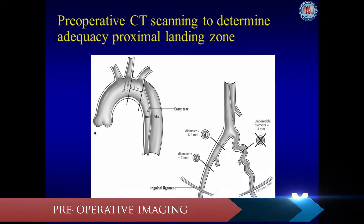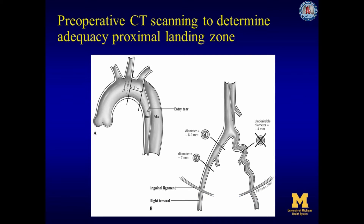The access vessels are determined — the ideal vessel is straight, not calcified, and of adequate diameter to accommodate the delivery sheath for the stent graft, in this case the right femoral artery. In cases of short discrete iliac stenosis, intraoperative iliac angioplasty is performed to allow for femoral delivery. If these access vessel requirements are not met, delivery is planned to a conduit placed on the common iliac artery or through the internal endo-conduit approach.